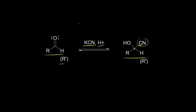Let's look in more detail at our carbon nucleophile, which is the cyanide anion. The cyanide anion is carbon triple bonded to nitrogen, with a lone pair of electrons on the carbon. That gives this carbon a negative one formal charge, which makes it a nucleophile — it's attracted to positively charged things.